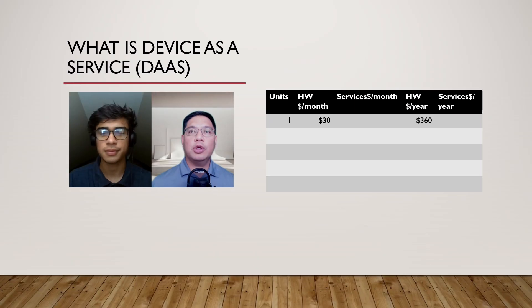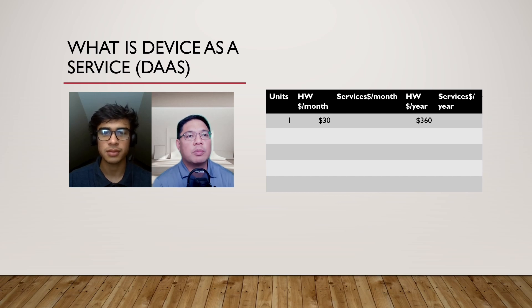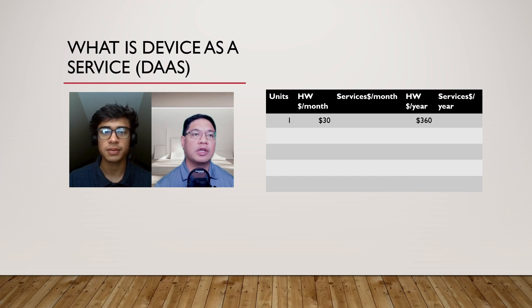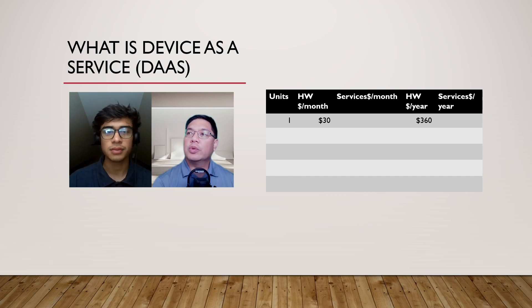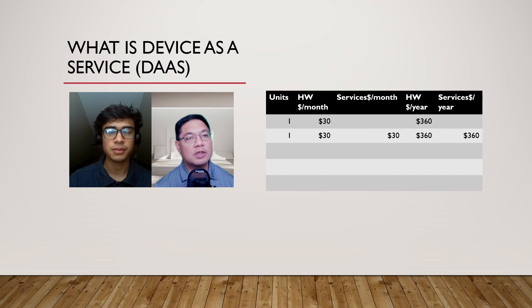Let me pull up a chart here and we'll talk about it. The way that it works is in the first year — using simple numbers — let's say the laptop is around a thousand dollars, so that breaks out to about thirty dollars a month. At Lenovo with our DAS offering, we add services similar to how phone companies add service. You have the ability to send us an image and we can put the image on something specific for your company, and if you want, we can handle the logistics of delivering the machine to the end user.